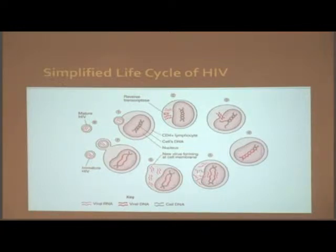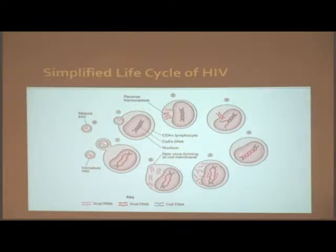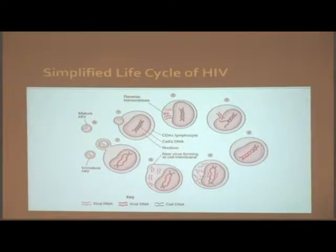Then the viral DNA enters into the cell's nucleus with the help of an enzyme called integrase. With the help of integrase, the viral DNA becomes integrated with the cell's DNA. The DNA of the infected cell now produces RNA, as well as proteins that are needed to assemble a new HIV.